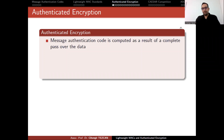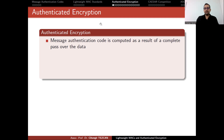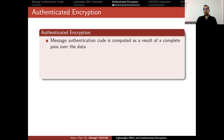With encryption, we solve the problem of confidentiality, and with message authentication codes, we solve the problem of authenticity. We can use them independently — AES for encryption to obtain confidentiality, and AES in CMAC mode to provide message authentication. But instead of using two different algorithms, can we have it as a single algorithm? That is what authenticated encryption means.